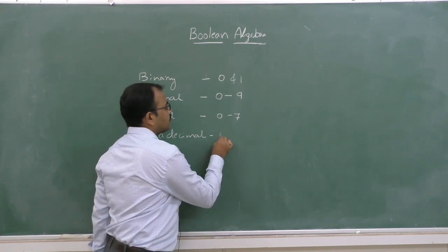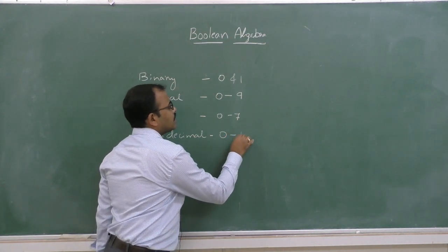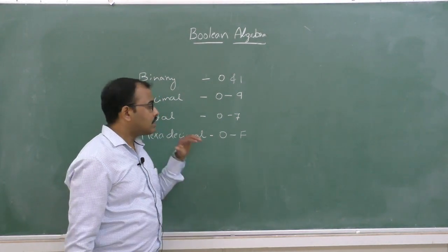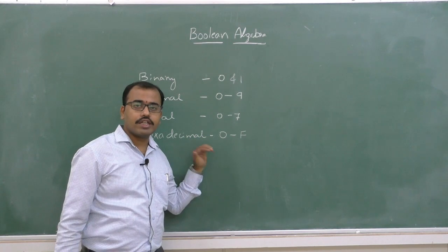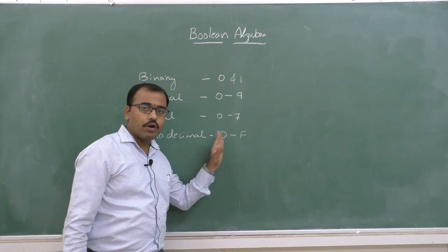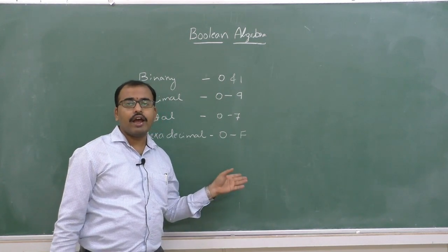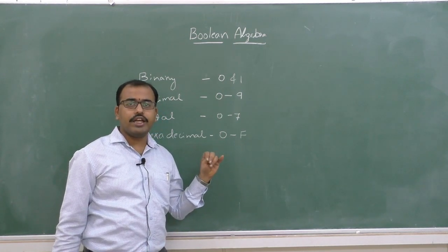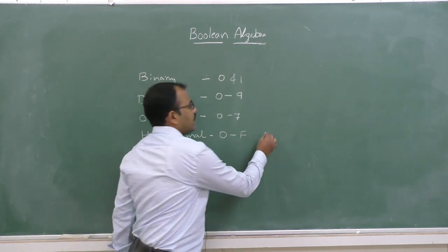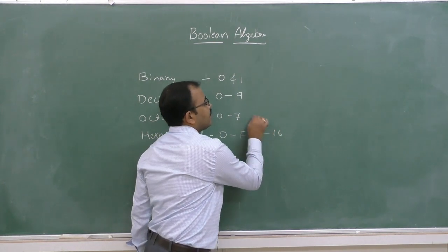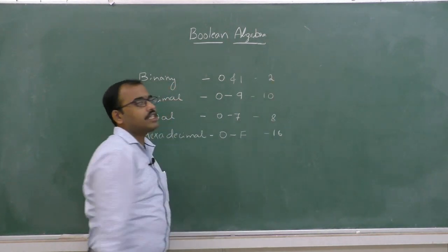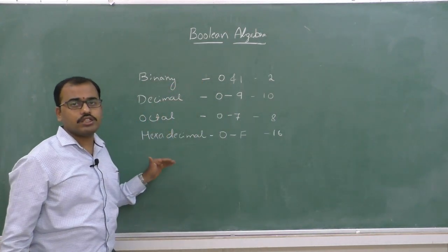In hexadecimal number system, there exist 16 different possible numbers. Those 16 are 0 to 9 — totally 10 — and A, B, C, D, E, F, up to F. So there exist 16 different numbers in hexadecimal, 8 in octal, 10 in decimal, and 2 in binary number systems.